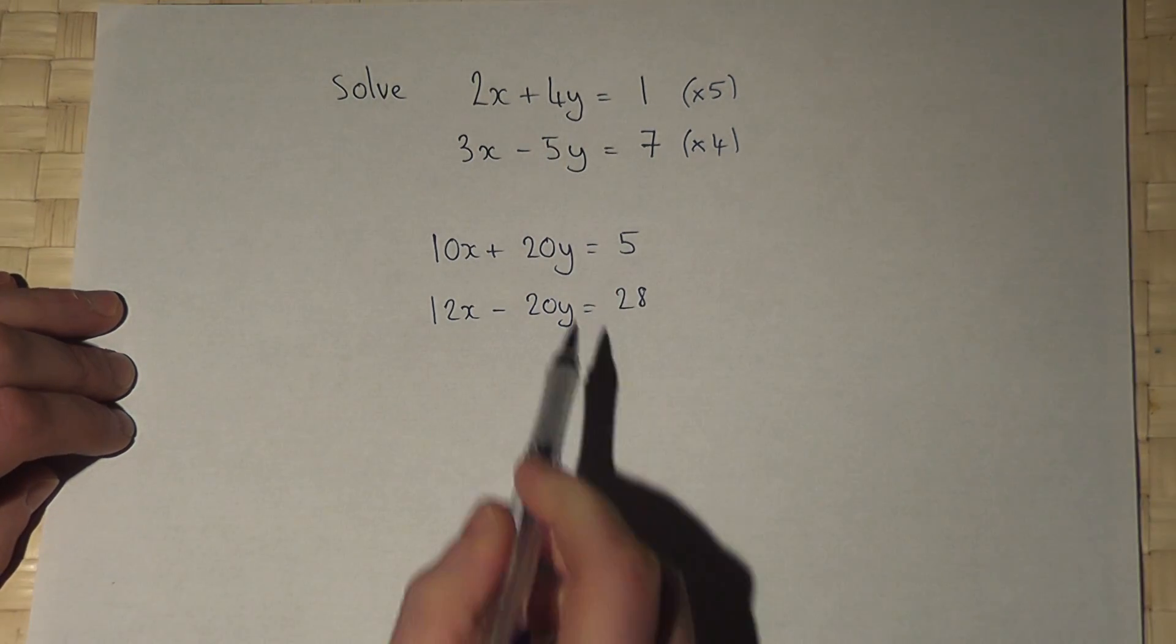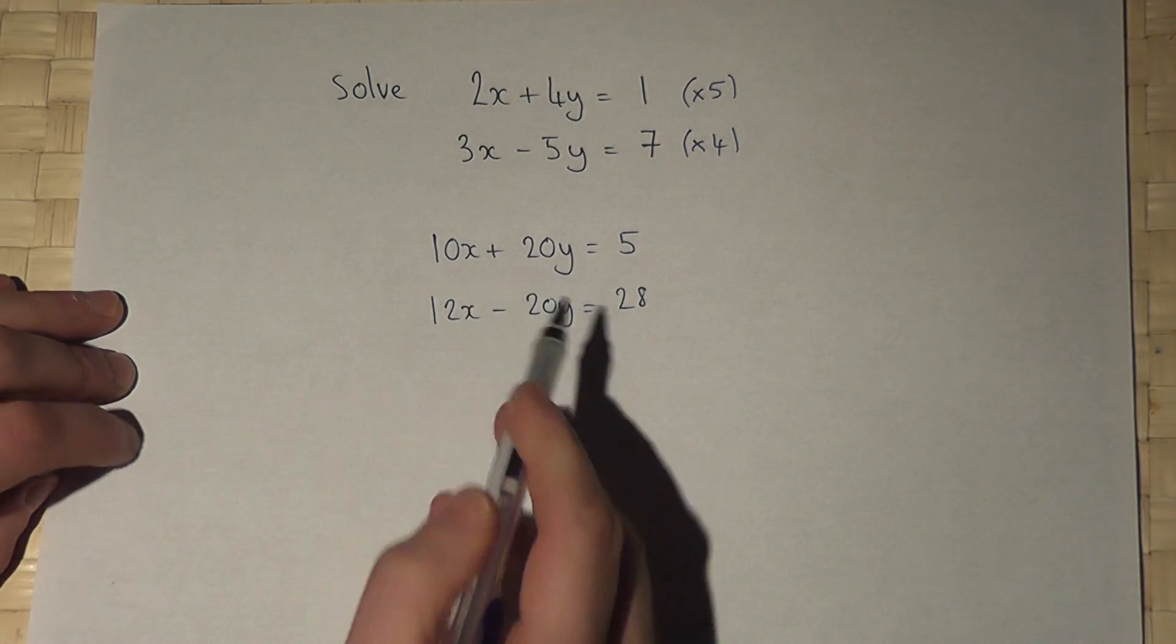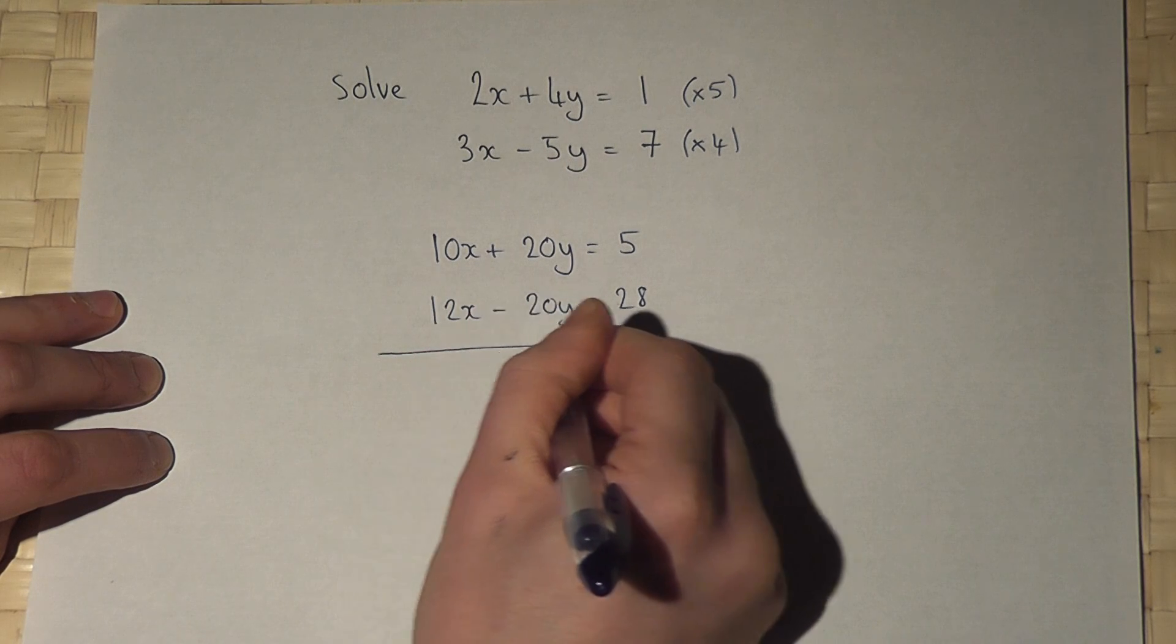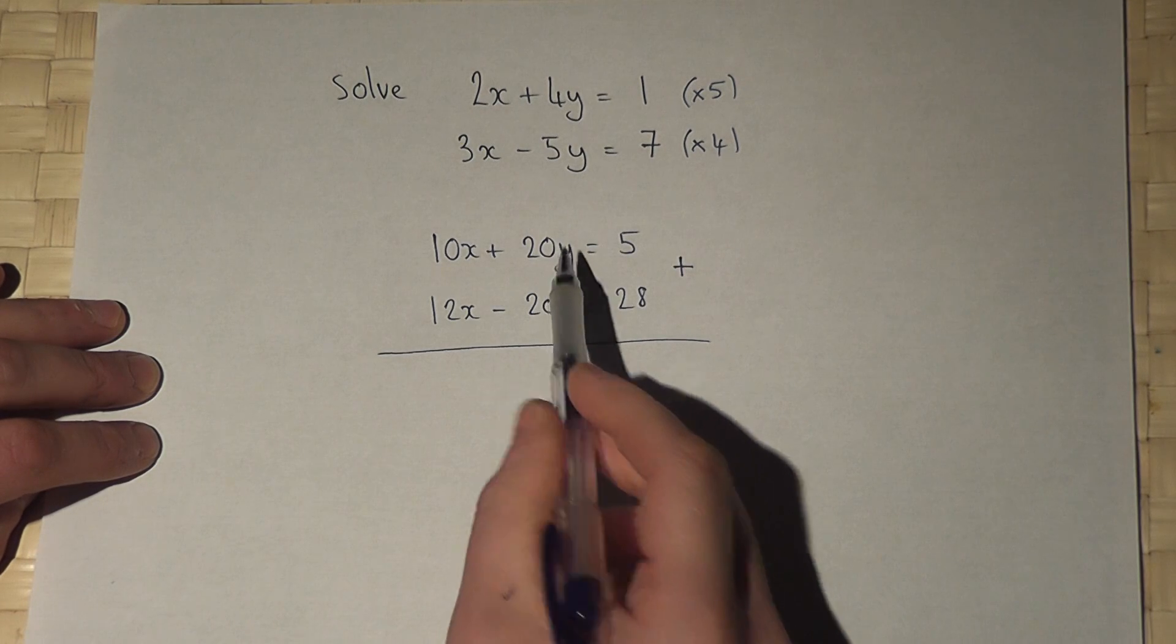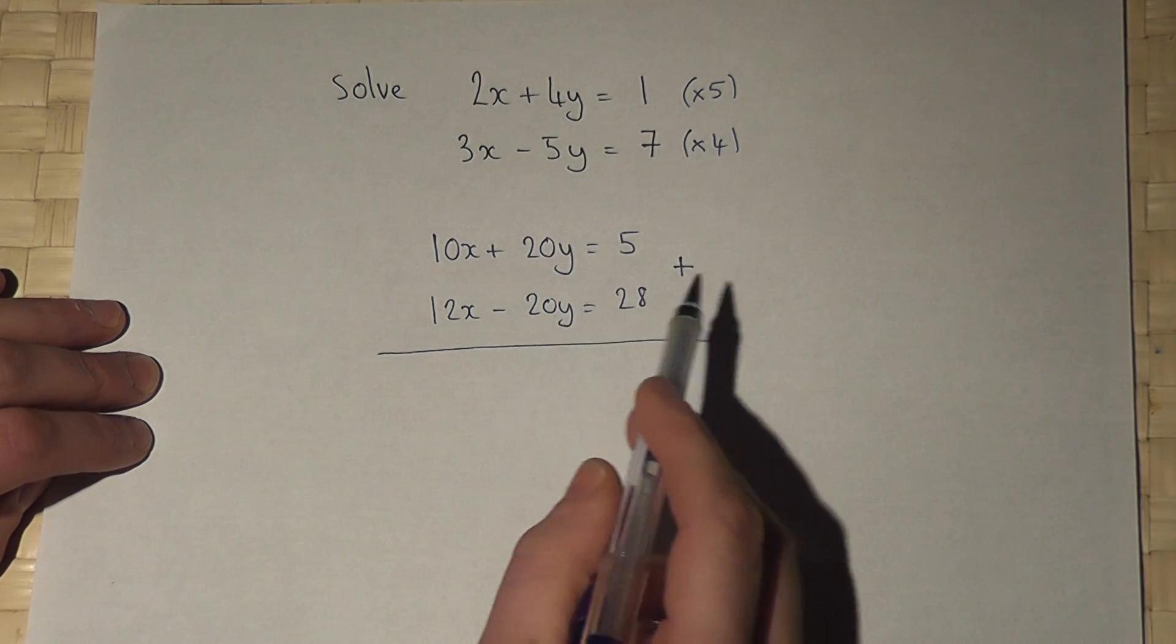So we've got the same number of y's, just a different sign. Now the rule here is if we add together the two equations, the 20y and the minus 20y cancel out.